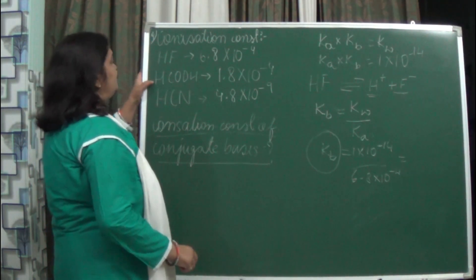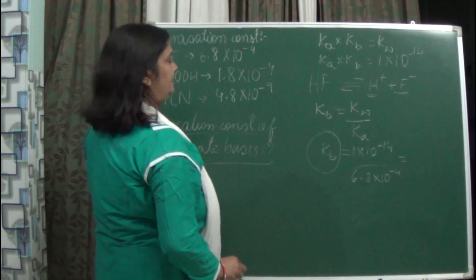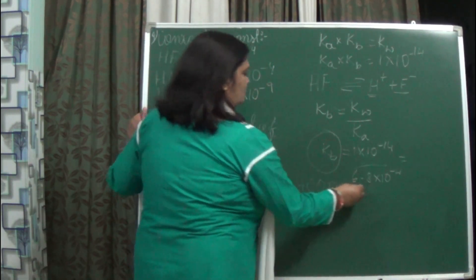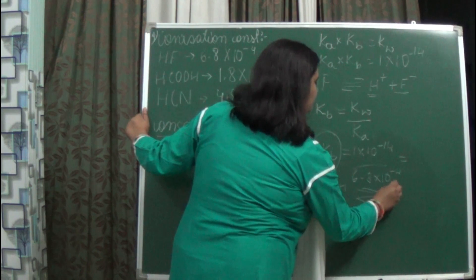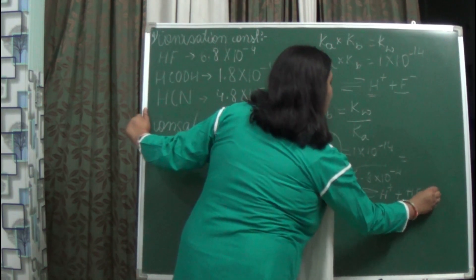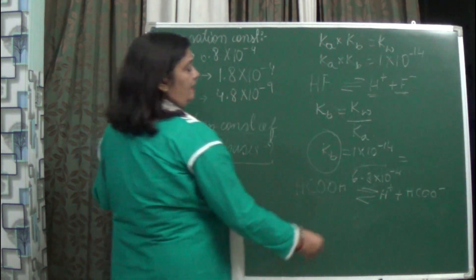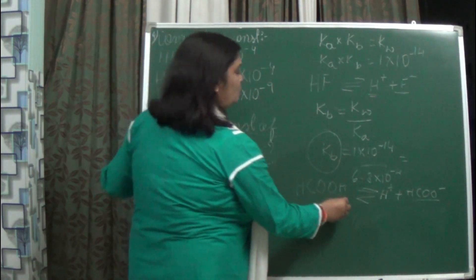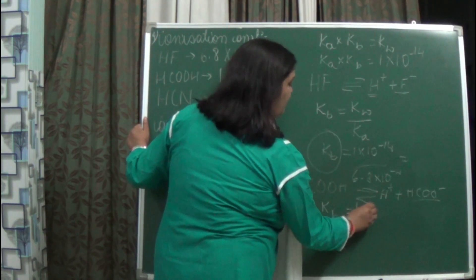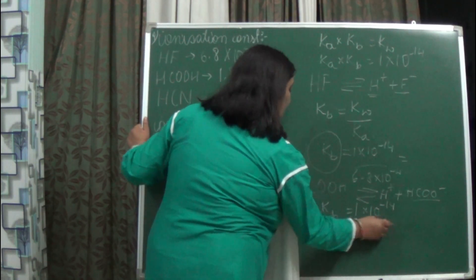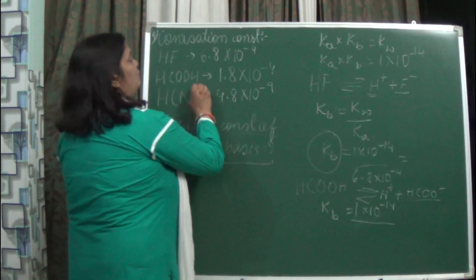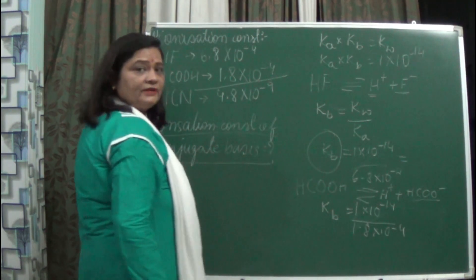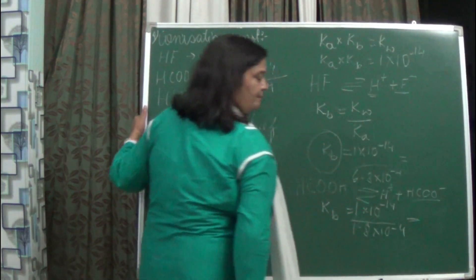Now come to HCOOH — formic acid. Write the reaction: HCOOH will ionize to form H⁺ ions plus HCOO⁻ ions. The conjugate base here is HCOO⁻. So Kb equals Kw upon Ka: that is 1 into 10 to the power minus 14 divided by 1.8 into 10 to the power minus 4. Solve it to get the answer.